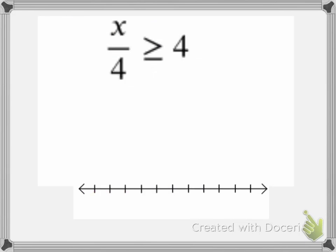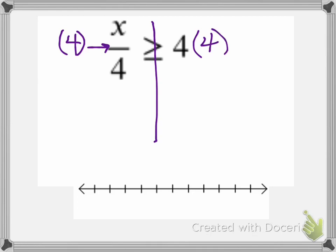Last example: if I have x over 4 is greater than or equal to 4. If I want to solve that, I'm going to draw my bar. This fraction bar means divide, so the inverse operation of division is multiplication. I'm going to multiply both sides by 4. My 4s eliminate on the left, leaving me x. My inequality sign is greater than or equal to, and 4 times 4 is 16.